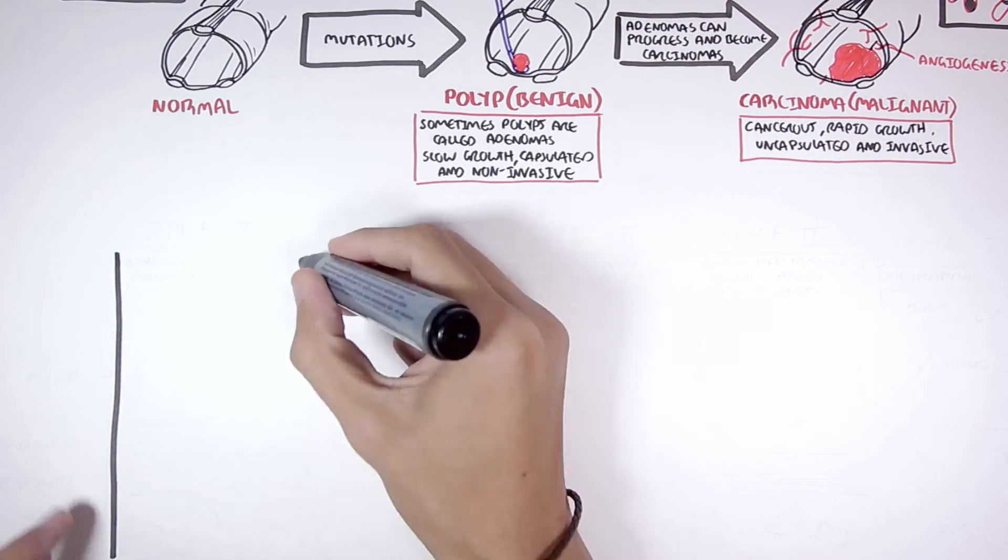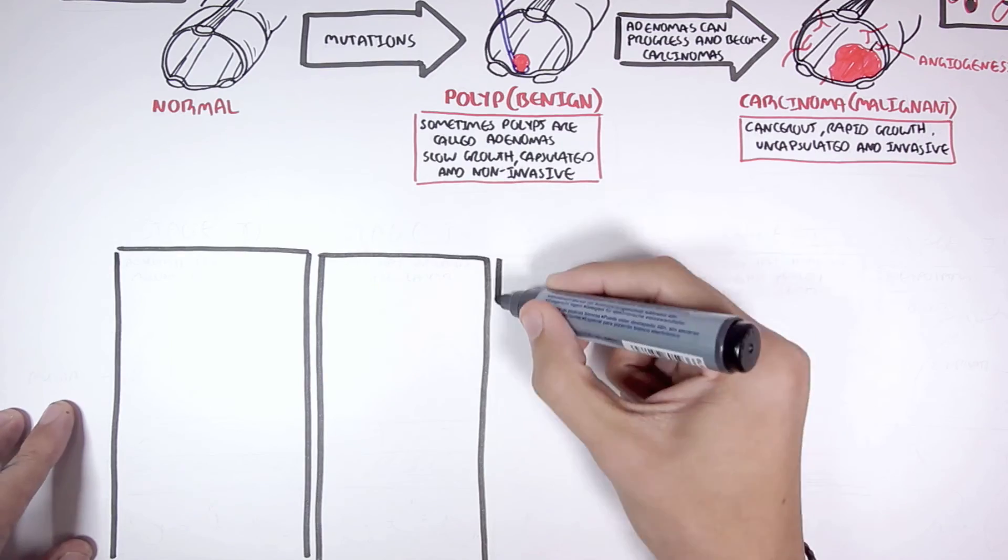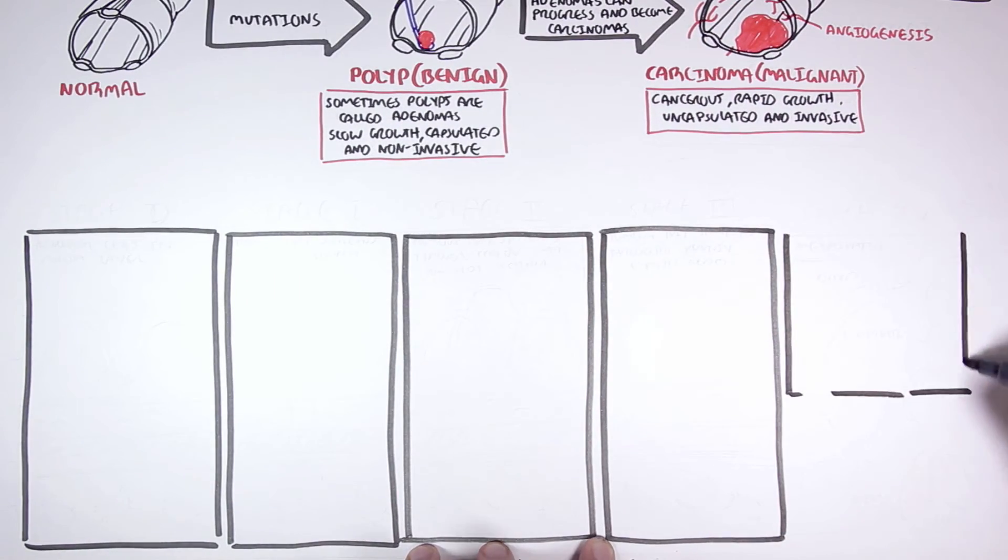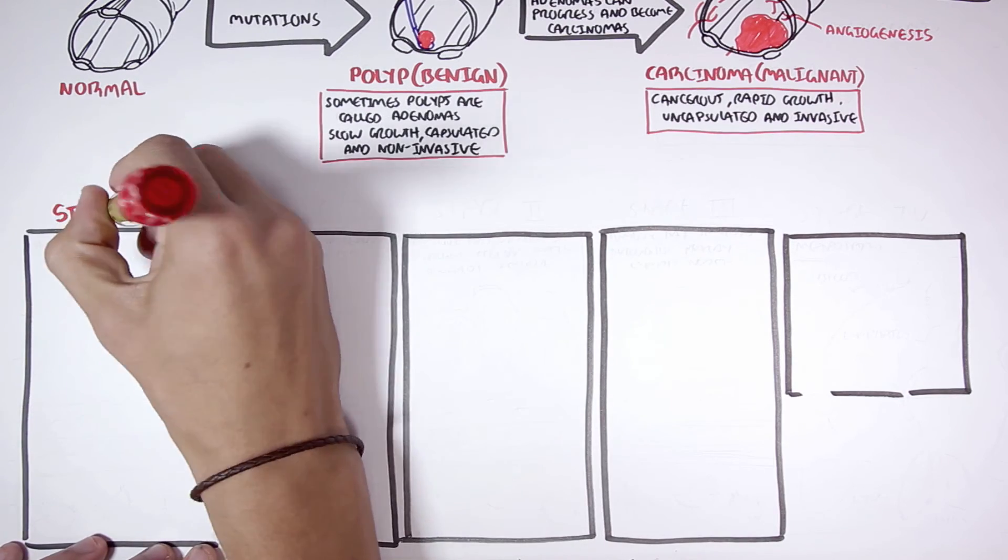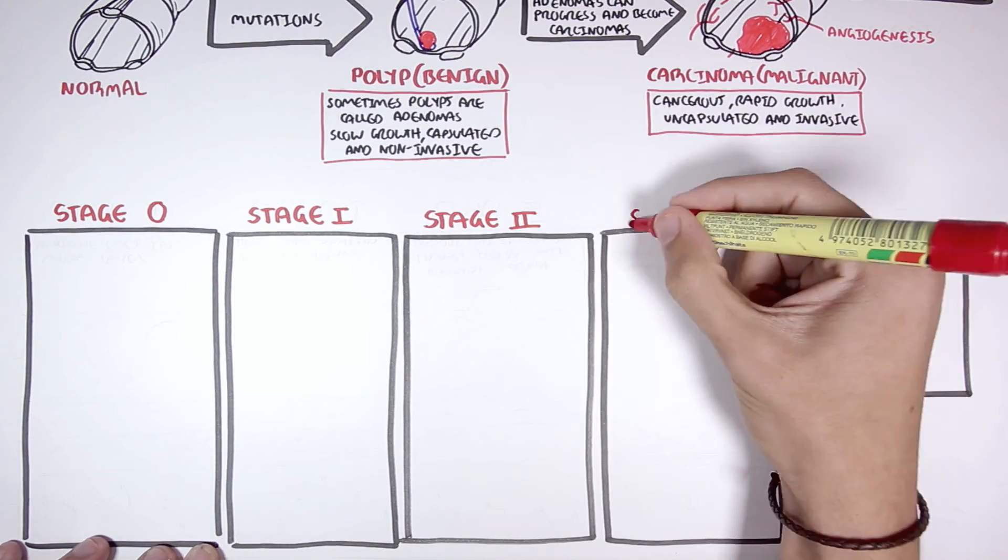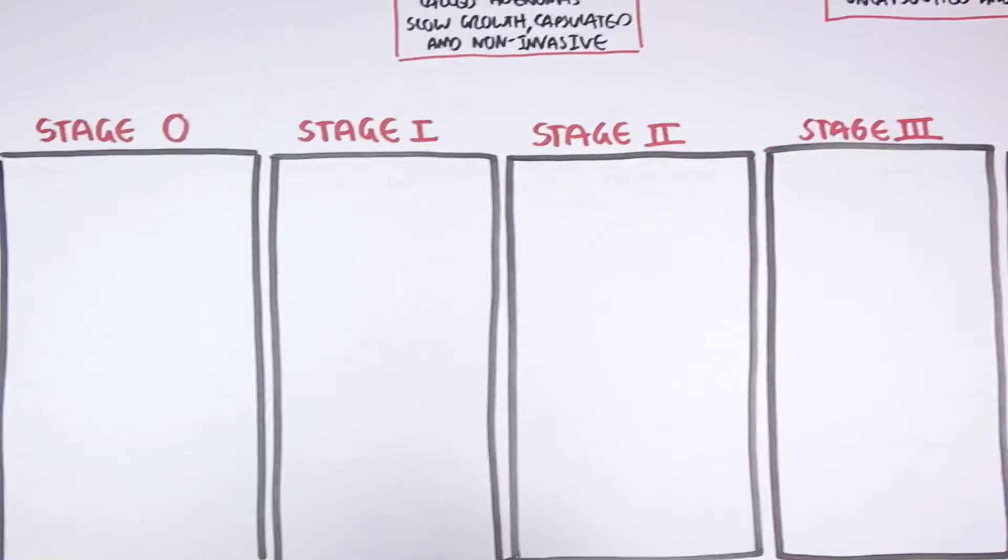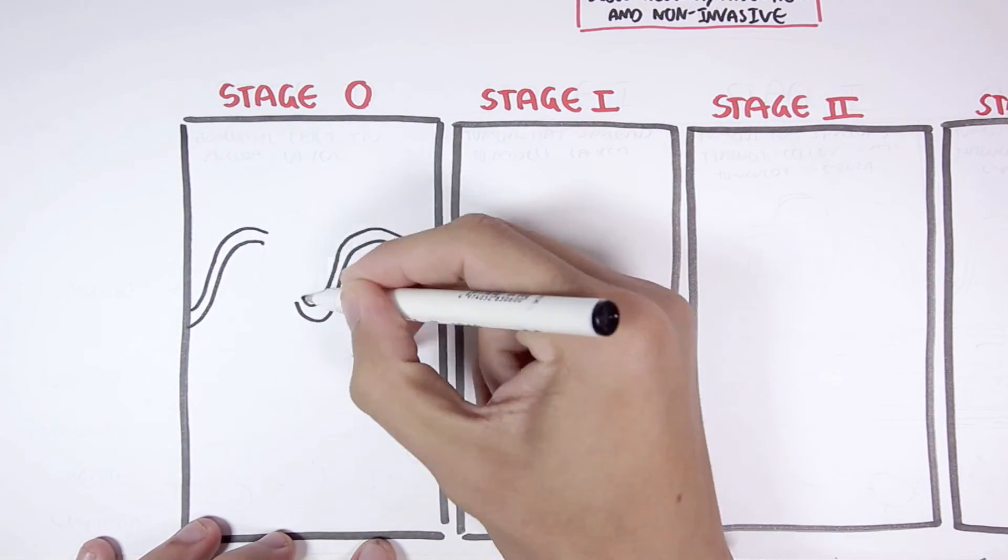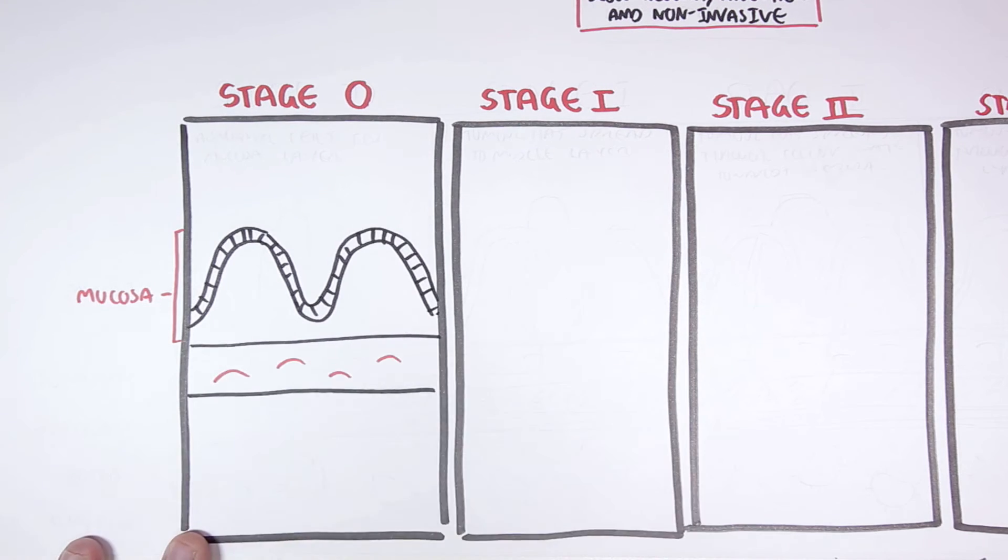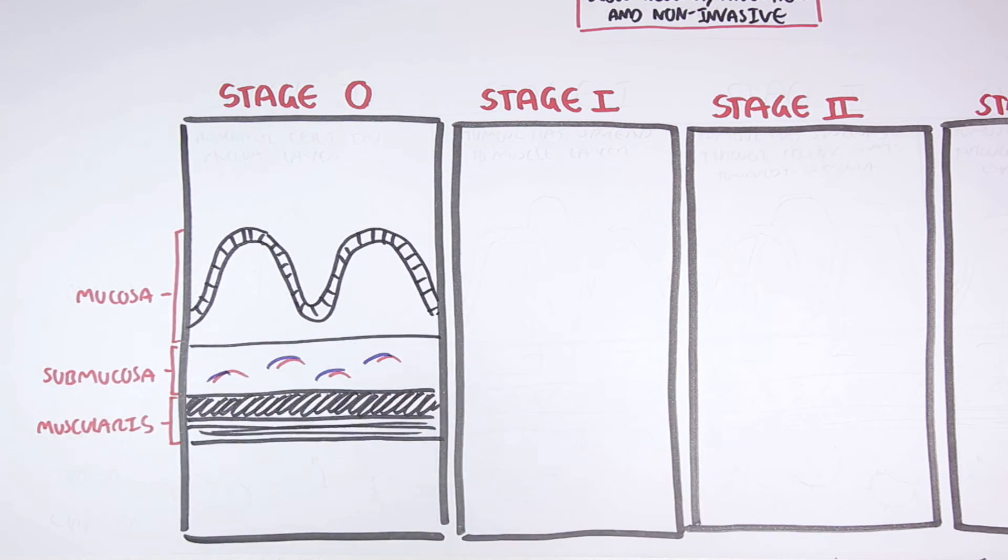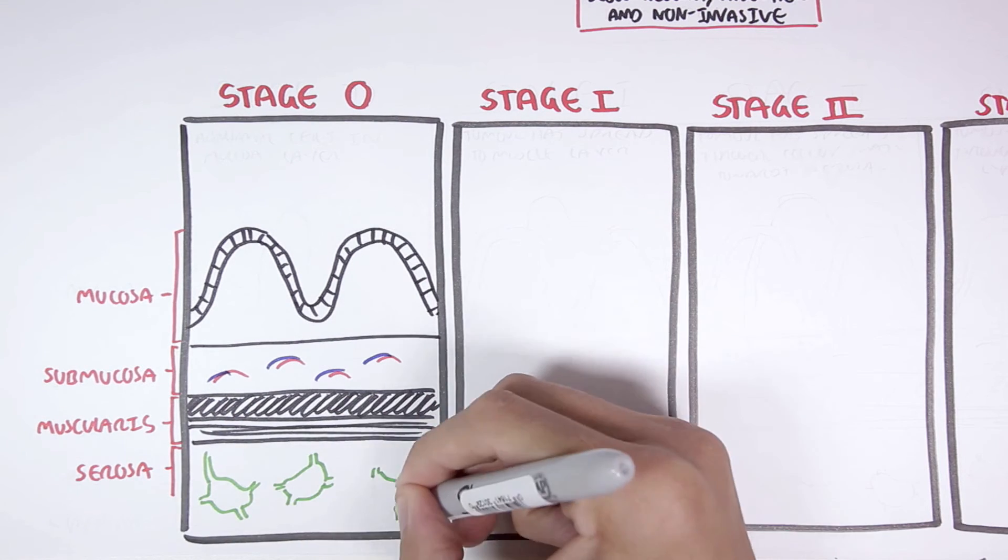Now let us look at the stages of colon cancer. Some people have different classifications of cancer and colon cancer. This is one of them. There are five stages in total. Briefly looking at the anatomical layer of the colon, from the top we have the mucosa, the submucosa, the muscularis, and serosa. We can also find lymph nodes following these layers.